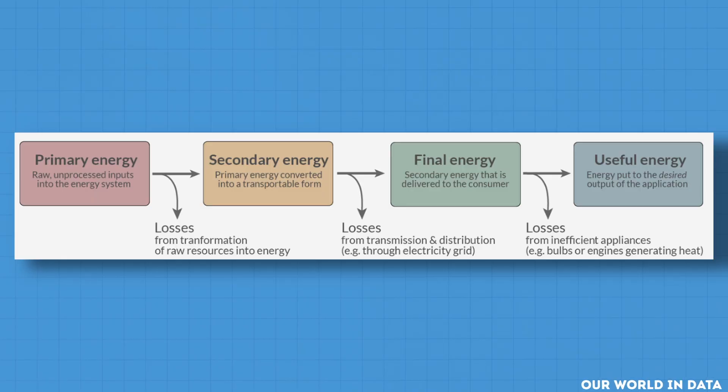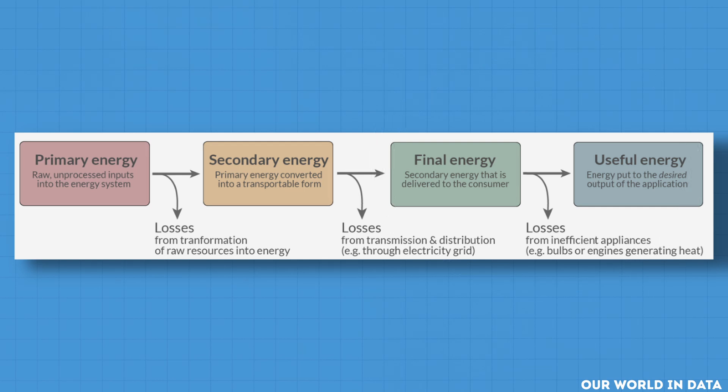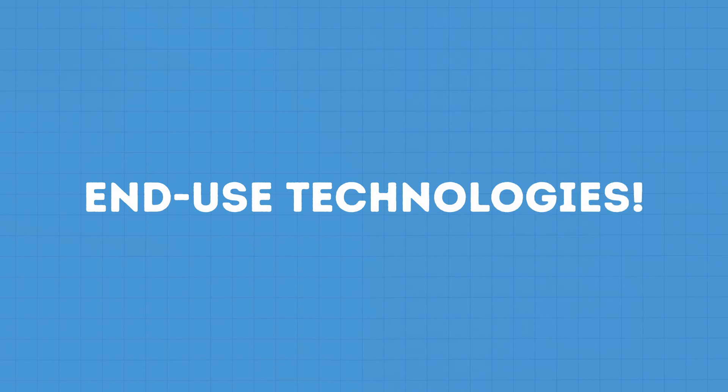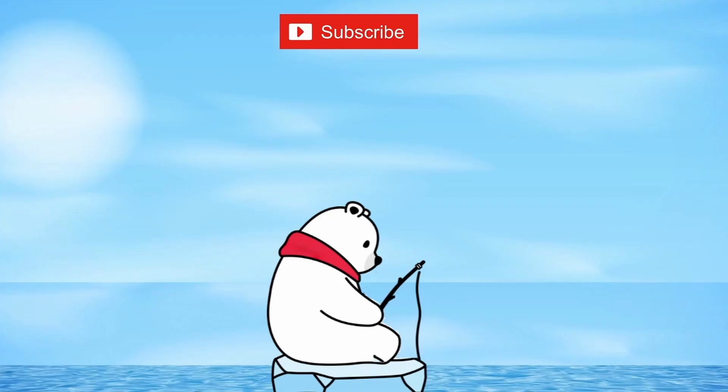If possible, metrics that look at more final uses — either useful energy or final energy — are already better. Final energy still overstates the role of oil, as it does not take into account the efficiencies of technologies like cars, but it's still better. It would also be good if reports and graphs would clearly state what method was used, instead of putting it in page 47 of the annex.